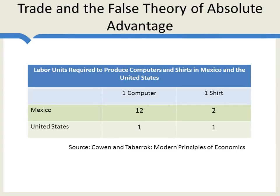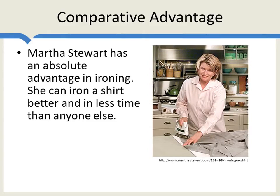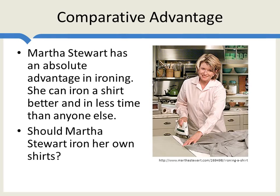That's the theory of absolute advantage. It's very plausible, but it's also very wrong. To see why it's wrong, let's take another simple example. Here's a picture of Martha Stewart ironing her shirt. Let's stipulate that Martha Stewart has an absolute advantage in ironing — just like the United States had an advantage in producing computers and shirts in the previous example. In other words, Martha Stewart can iron a shirt better and in less time than anyone else. So, should Martha Stewart iron her own shirts? The answer is no. Every hour Martha Stewart spends ironing is an hour she's not spending doing something else which is even more valuable — running her billion dollar business, for example.